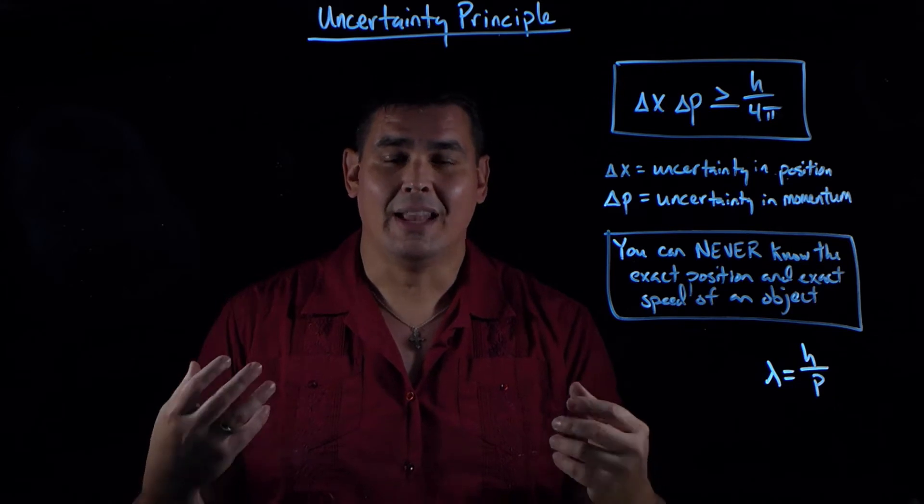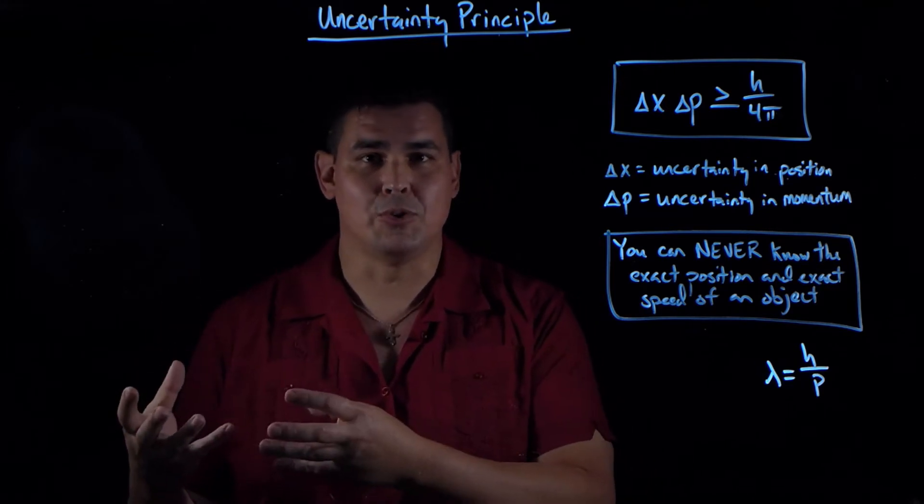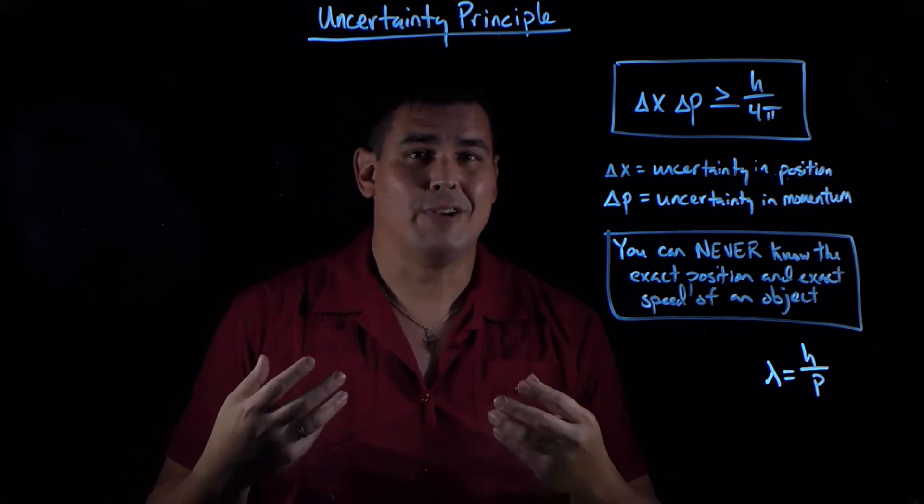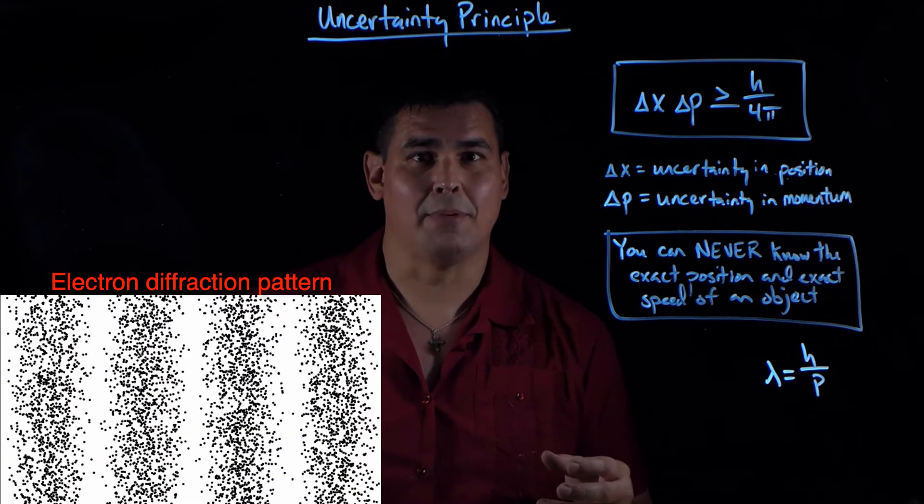For example, electrons. Electrons can behave like particles. You can shoot them at things, they have mass, they have charge. But electrons have also been shown to diffract if you shine them through a double slit apparatus.